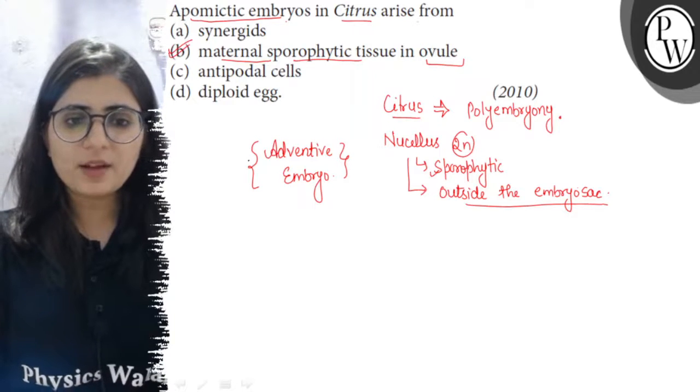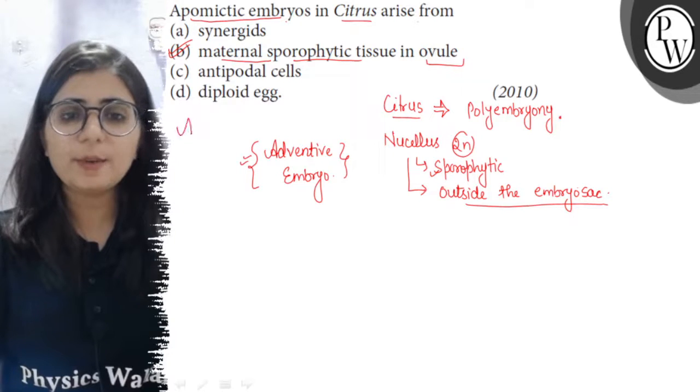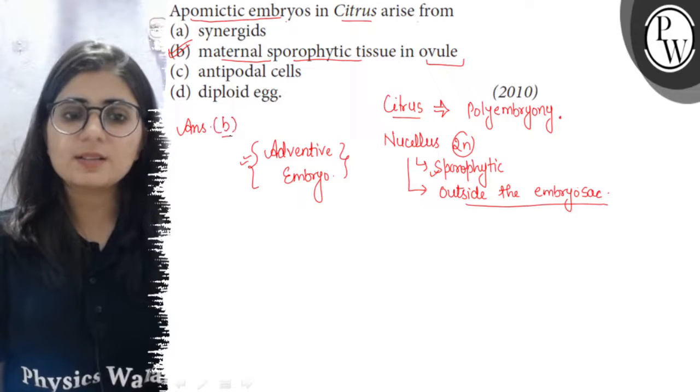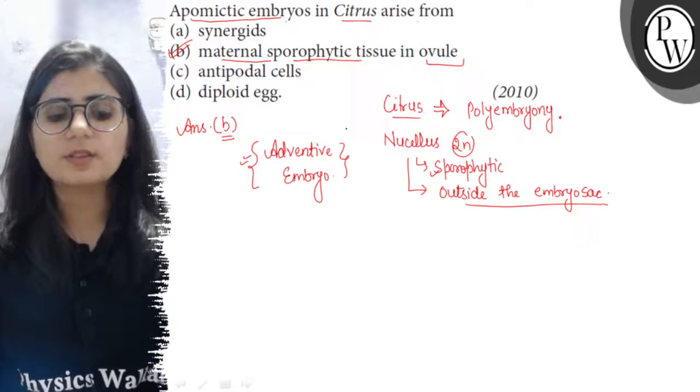Option B satisfies the case of adventive polyembryony, so it is the right answer. All the best.